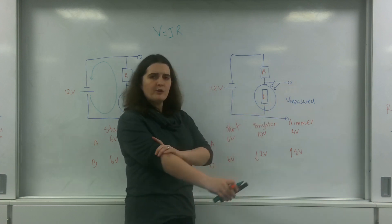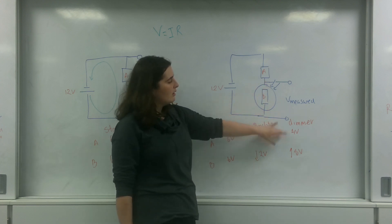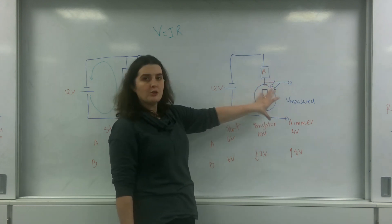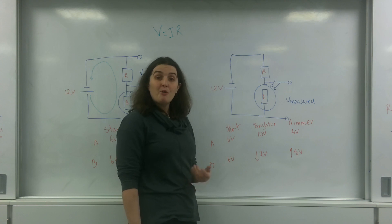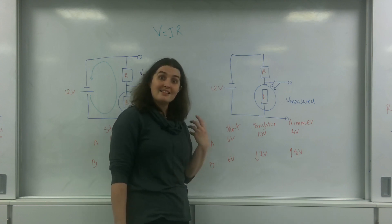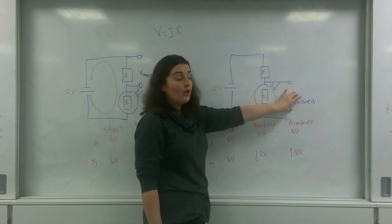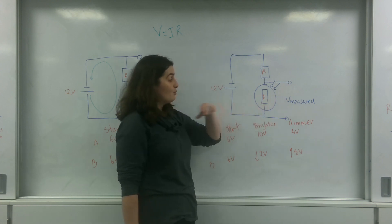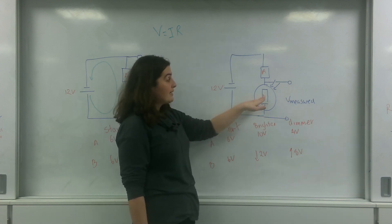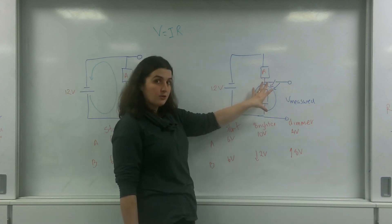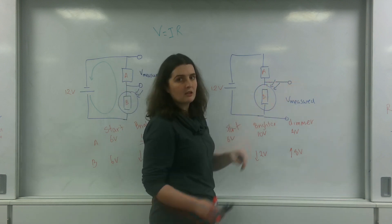So this is a circuit where, when it gets really bright, the measured voltage gets less potential. This is something you may want to activate when it's dark, because when it is really dark this part gets more potential. You might want it as a light switch — so when it starts getting dark outside, the light turns on, because when it's really dim this gets lots of voltage.